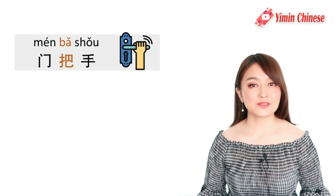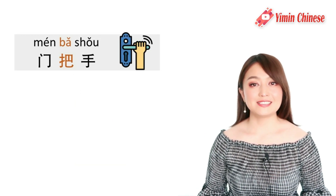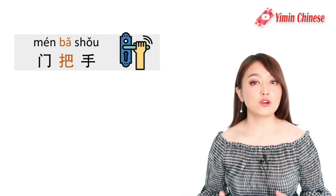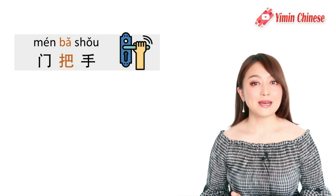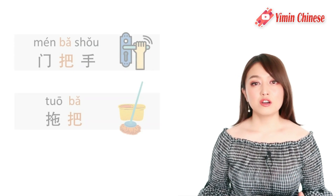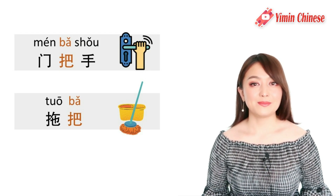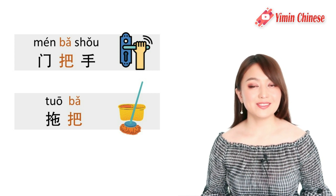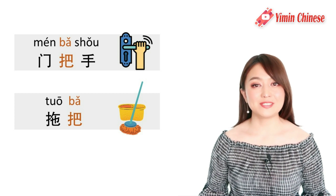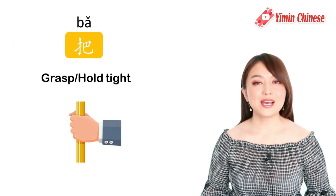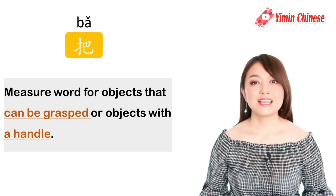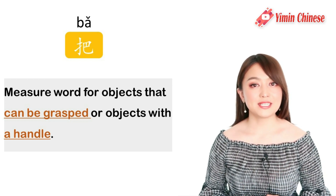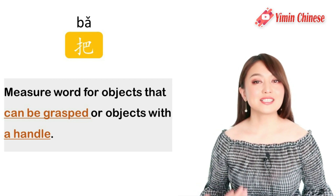So we can see this character in words like 门把手, which means 'door handle', or 拖把, which means 'mop' — it has a big handle that we grasp when we use it. That's why 把 is chosen as a measure word for objects with a handle or objects we can grasp, to be more expressive.